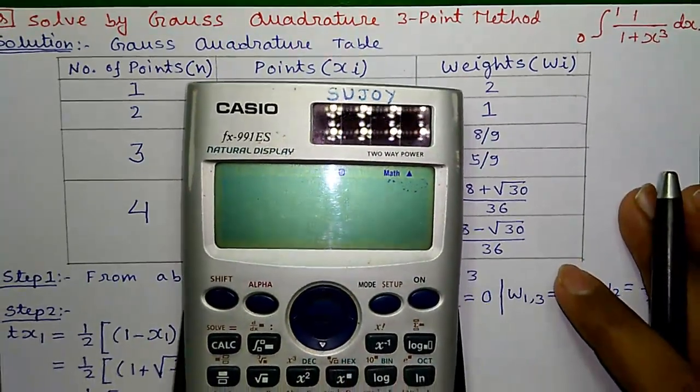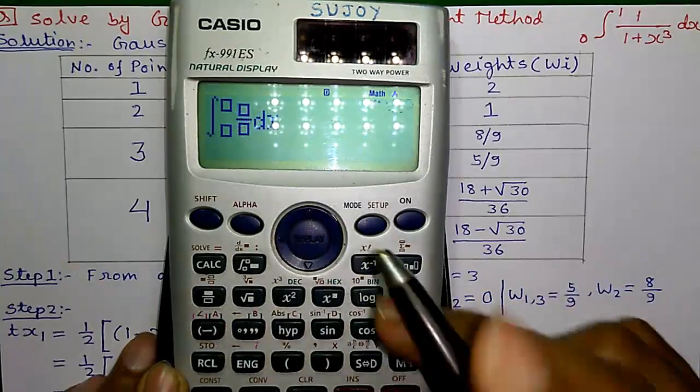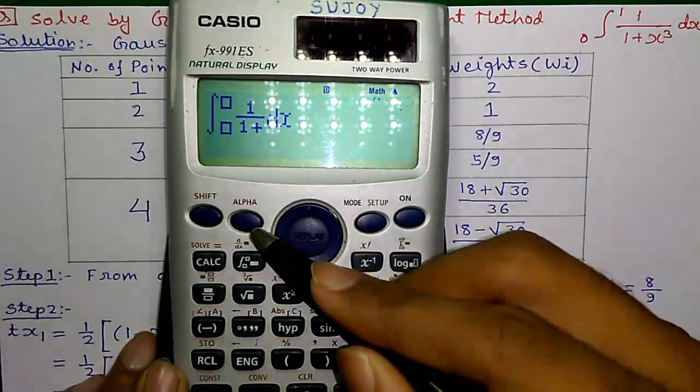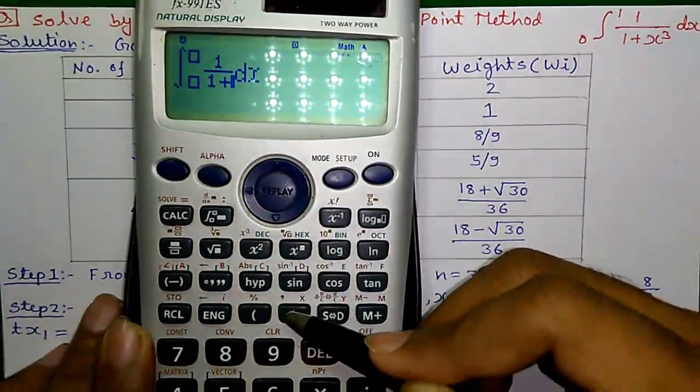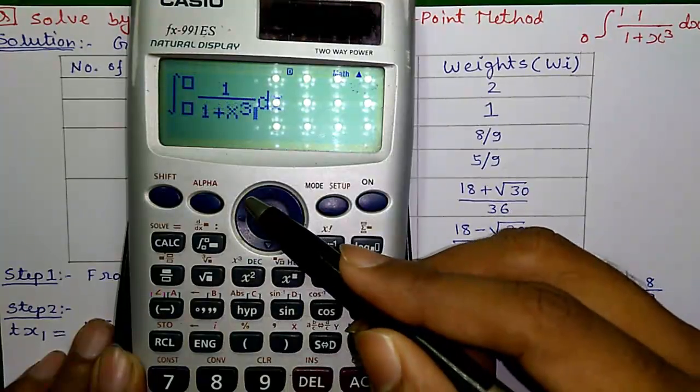First, solve it on the calculator. For that, press the integration button, then press the fraction button. 1 divided by 1 plus, press alpha and this button for x and press shift and x square button to get cube.